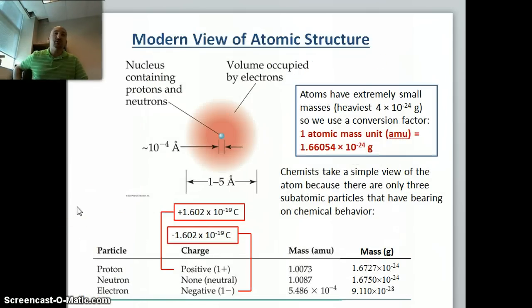Most of the volume of the atom is in empty space, which contains the electrons, but the nucleus contains both the protons and the neutrons. Protons and neutrons are much heavier than electrons. In fact, it would take over 1,800 electrons to equal the mass of just one proton. Since the mass of the particles are so small, around 10 to the minus 24 to about 10 to the minus 28, which you can see on this table, we can convert grams to atomic mass units, abbreviated AMUs.